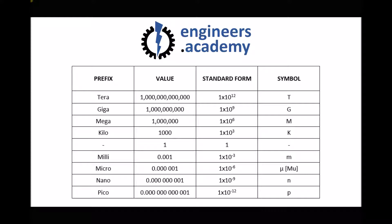This table highlights our most common metric prefixes. When dealing with large numbers, we have kilo (10 to the 3), mega (10 to the 6), giga (10 to the 9), and tera (10 to the 12). When dealing with smaller numbers, we have milli (10 to the minus 3), micro (10 to the minus 6), nano (10 to the minus 9), and pico (10 to the minus 12). You don't need to remember these — they are provided on the equation and information sheet for this unit.